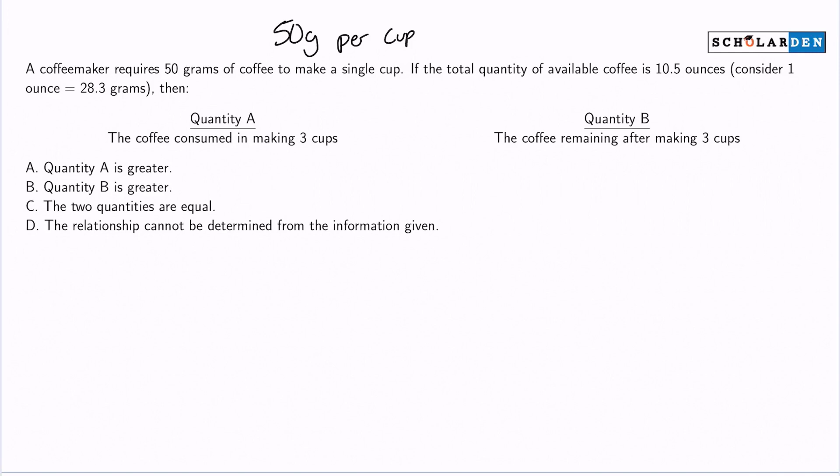We see that we have 10.5 ounces available. I don't like that we have ounces and grams, so we're going to convert here. And we see that we have 1 ounce is 28.3 grams. So what I can say here is immediately, not 10.5 ounces, but 10.5 ounces multiplied by 28.3 to get that in grams. And so this is 297.15 grams. So that's how much total coffee we have available.